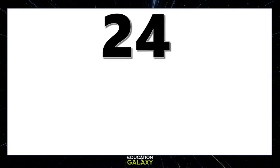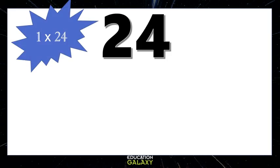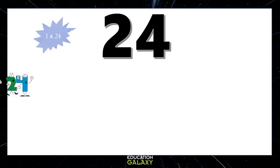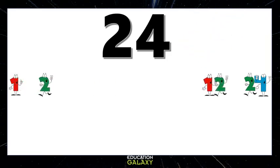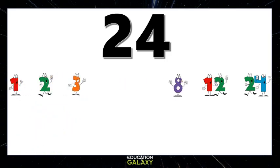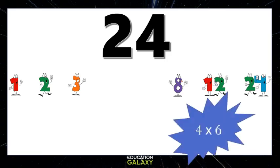We know that 1 times 24 is 24, so both 1 and 24 go into 24 evenly. 2 times 12 equals 24, so that means 2 and 12 are factors. 3 times 8 is 24, so they're factors too. 4 times 6 as well.